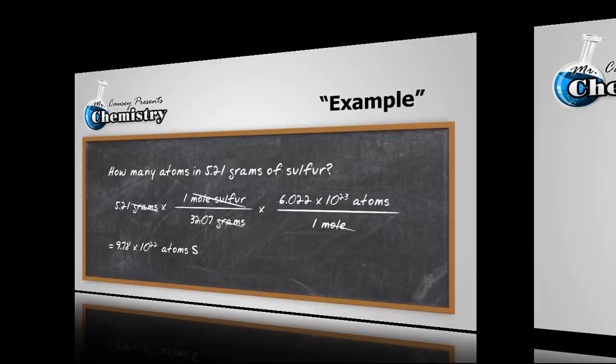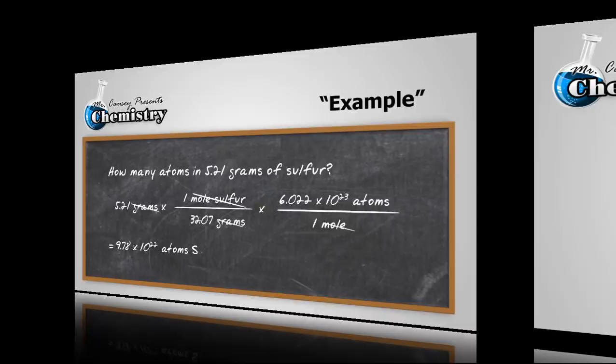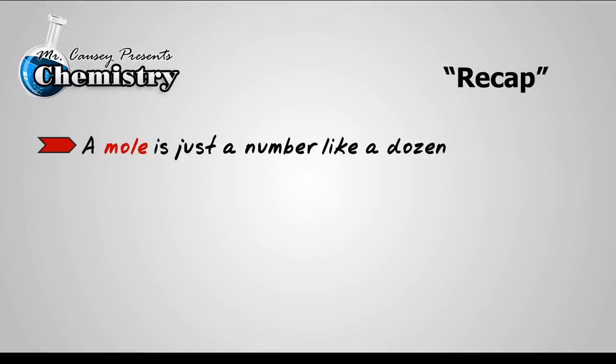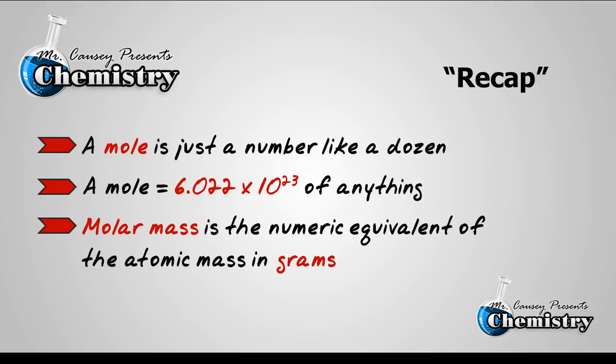All right, let's recap. A mole is just a number like a dozen, which is 12. A mole equals 6.022 times 10 to the 23 of anything. And molar mass is the numeric equivalent of the atomic mass in grams. And the reason that's possible, you can find out in one of my other videos.